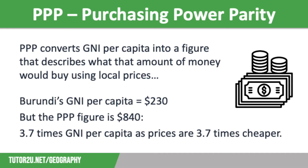However, some argue that it isn't that straightforward. For example, in 2023 the GNI per capita in Burundi in Africa was just $230. This sounds very little because it is — but in Burundi, $230 is very different to $230 in a high-income country like the UK. Prices in Burundi are much cheaper, so that $230 will pay for many more goods and services. To overcome this disparity, the World Bank uses Purchasing Power Parity, or PPP, which converts a GNI per capita value into a figure describing what that amount of money would be able to buy using local prices. The PPP figure for Burundi is $840.